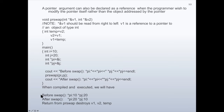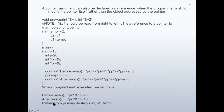When compiled and executed: before swap, the content of the item pointed by pi is 10, and the content of the item pointed by pj is 20. After the swap, the content of the item pointed by pi is now 20, and the content of the item pointed by pj is 10. On return from ptr_swap, v1, v2, and temp are destroyed.